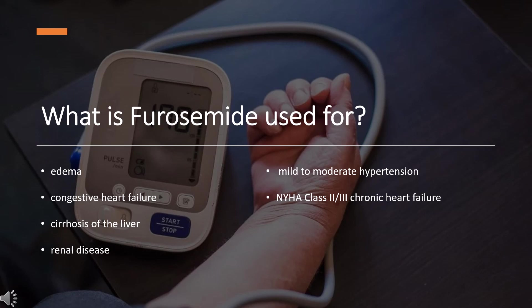Intravenous furosemide is indicated as adjunctive therapy in acute pulmonary edema when a rapid onset of diuresis is desired. Subcutaneous furosemide is indicated for the treatment of congestion due to fluid overload in adults with NYHA class 2-3 chronic heart failure. This drug formulation is not indicated for emergency situations or in patients with acute pulmonary edema.